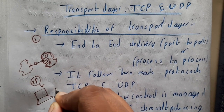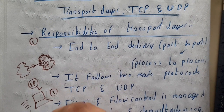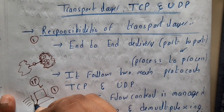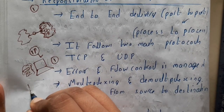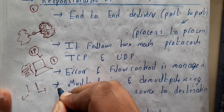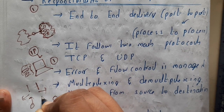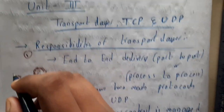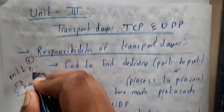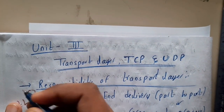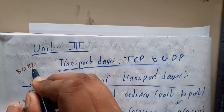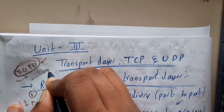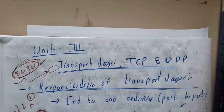Now, on a computer, will there be a single process or multiple processes running at a particular instance of time? There could be multiple things running in the background — some application requesting one file and another requesting a different file. That particular file should be delivered to the correct application. This delivery is taken care of by the transport layer, and it is popularly called port-to-port delivery. For example, if you are using a game that uses port number 8080, the packet will contain that port number so it automatically goes to that game only.